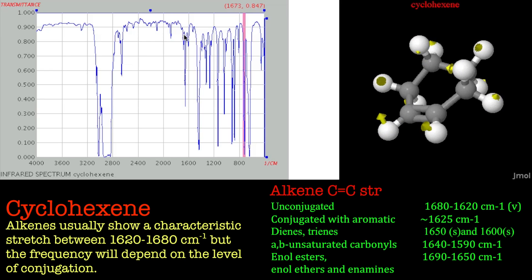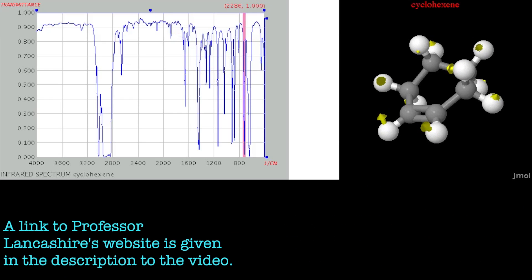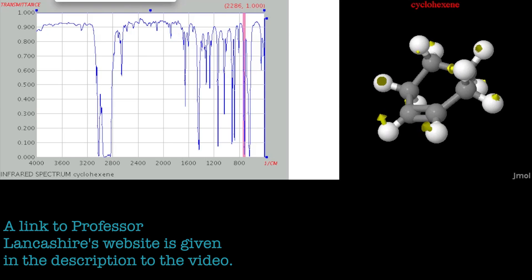So that's the carbon-carbon double bond and why we get some extra peaks sometimes. Do have a look at the theoretical video on infrared spectroscopy and look out for a few more examples as well. Bye for now.